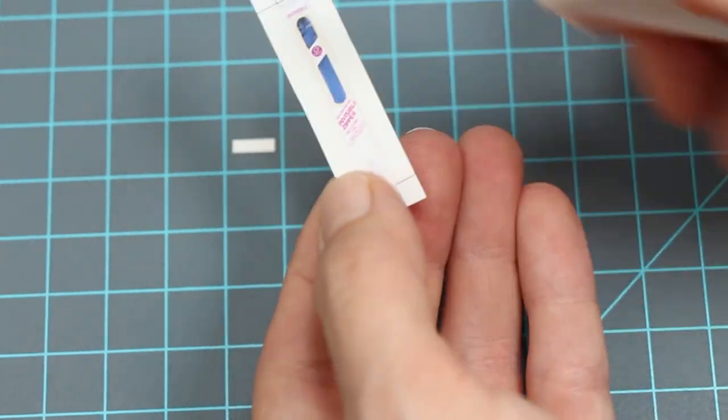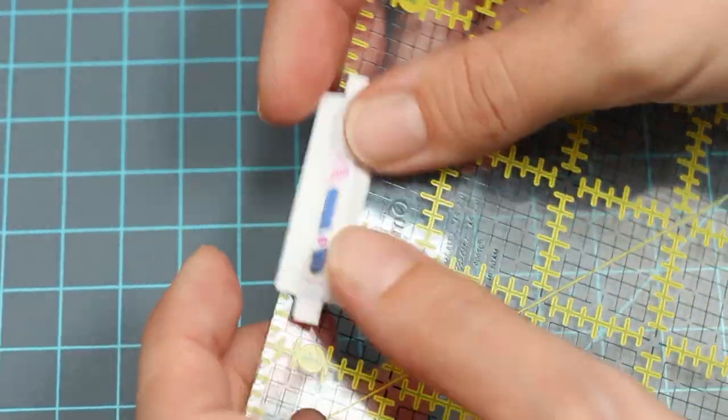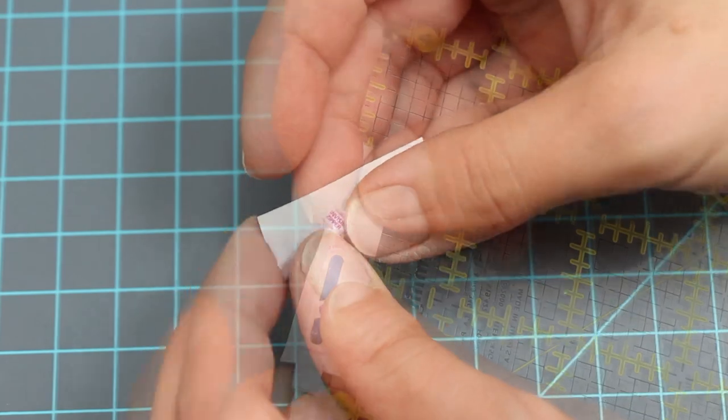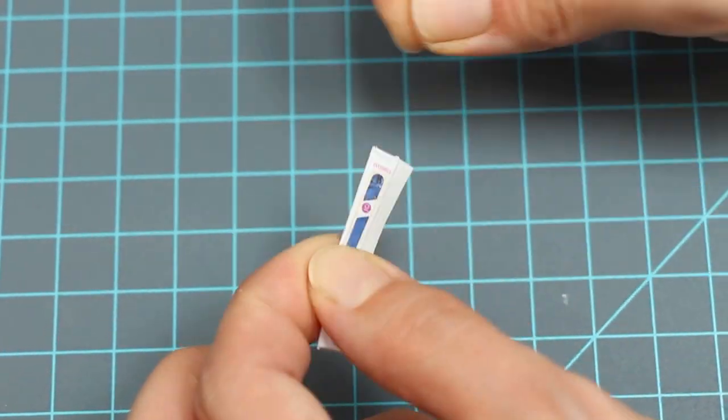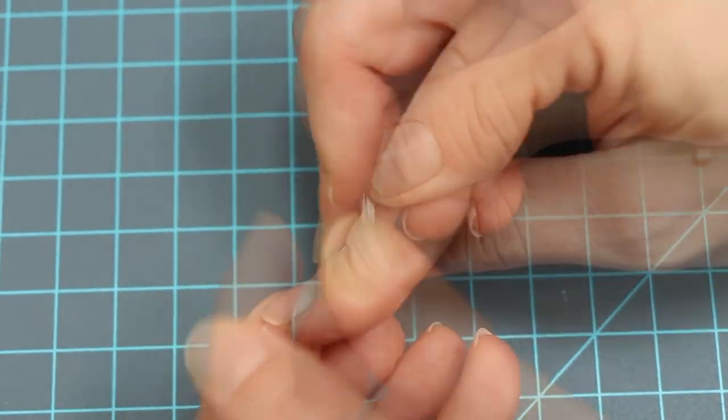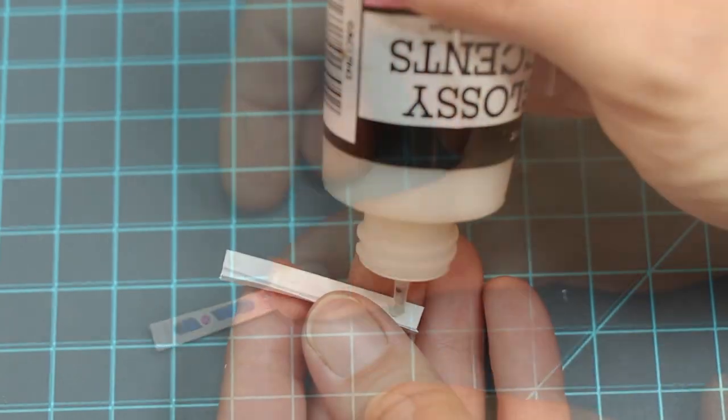To make zippers, cut out the zipper printable. Use a hard edge to help fold down the edges. Fold the top and bottom tabs in first, then the sides. Glue it together.